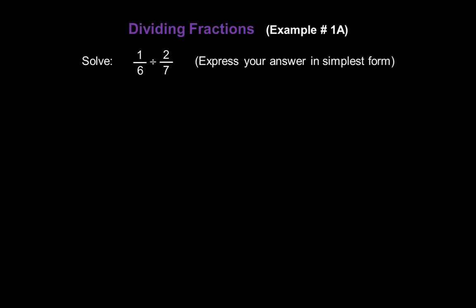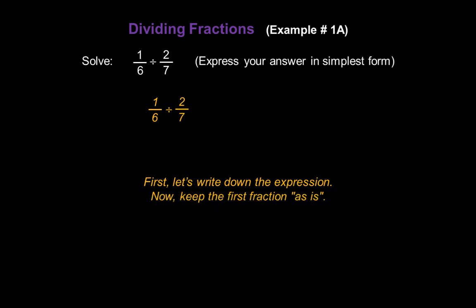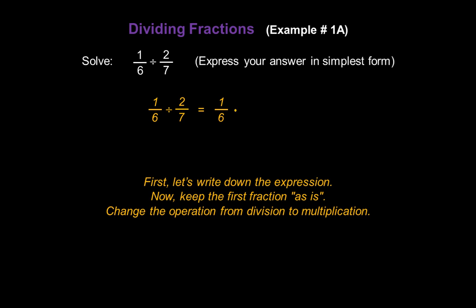Let's work some examples on dividing fractions. Let's solve 1 sixth divided by 2 sevenths, and express the answer in simplest form. We start by writing down 1 over 6 divided by 2 over 7. Keep the first fraction as is — rewrite 1 over 6. Change the operation from division to multiplication. And flip the second fraction: 2 over 7 becomes 7 over 2.